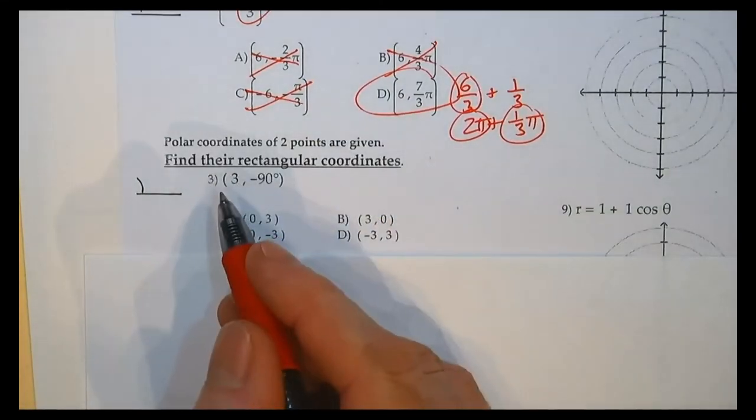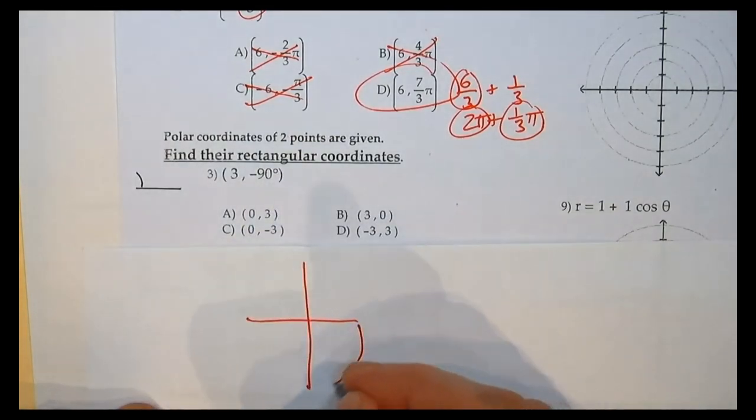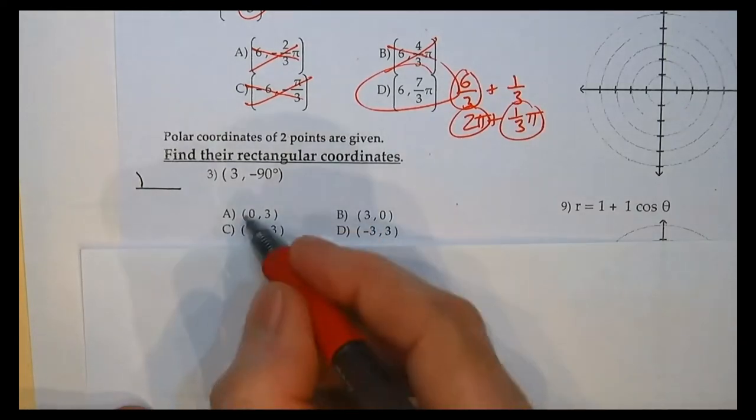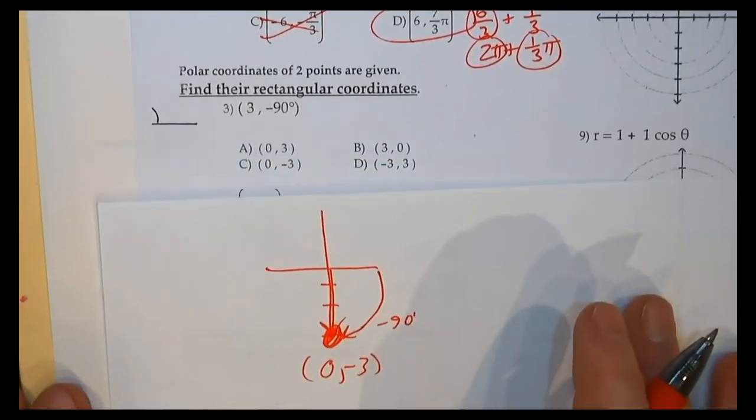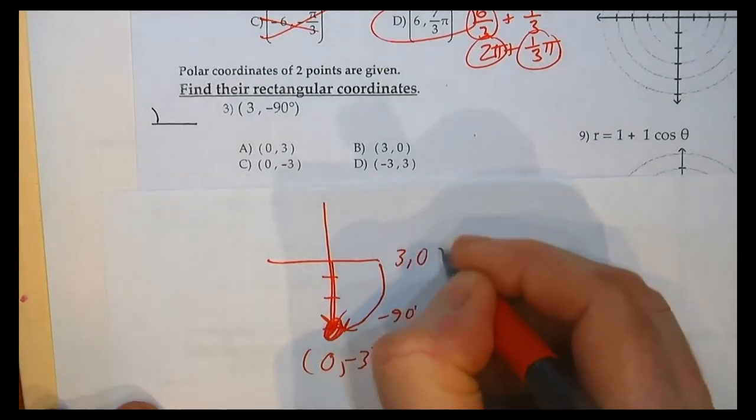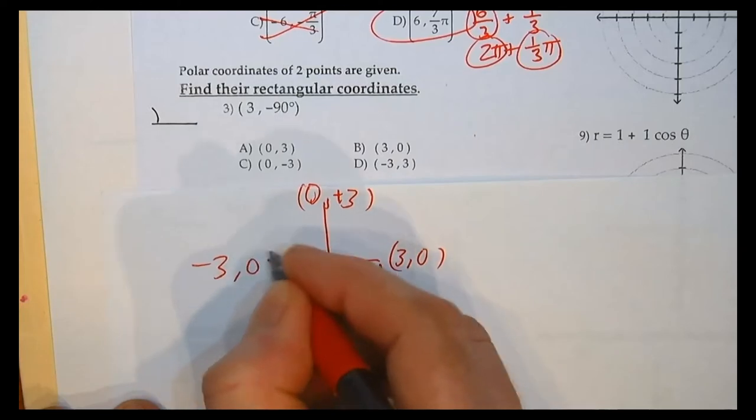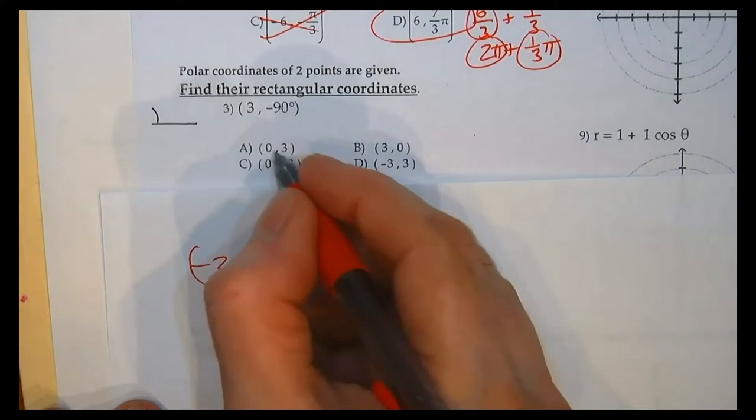Find the rectangular coordinates of 3, negative 90. Let me draw this guy out. 3, negative 90. Negative 90 this way and three. 1, 2, 3. Okay, so we go this way in outer radius of 3. So here's where I'm at. So if I thought about regular graph paper, that's the point 0, negative 3. Because over here's 3, 0. Here's 0, 3. Here's negative 3, 0 and 0, negative 3. So negative 90 down 3. I would have picked that one right there.